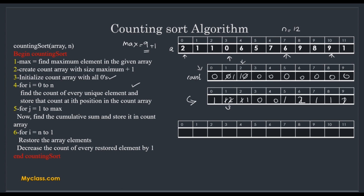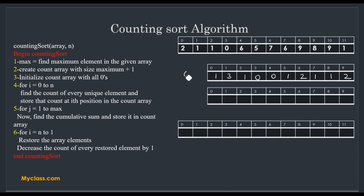After finding the count of every element, our count array is updated. We are not creating a new count array — only one count array is used. Next is the fifth step: for j equal to 1 to max, find the cumulative sum and store it in the count array. So index 1 becomes 1 + 3 = 4; index 2 becomes 4 + 1 = 5; index 3 becomes 5 + 0 = 5; index 4 stays 5; index 5 becomes 5 + 1 = 6; index 6 becomes 6 + 2 = 8; index 7 becomes 8 + 1 = 9; index 8 becomes 9 + 1 = 10; index 9 becomes 10 + 2 = 12. Now the count array contains cumulative frequencies.